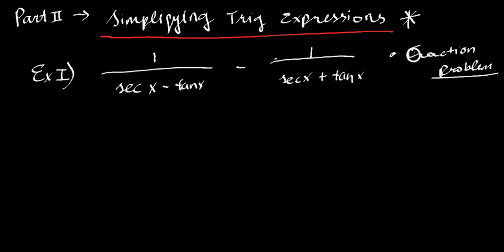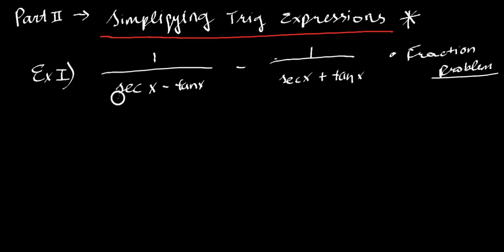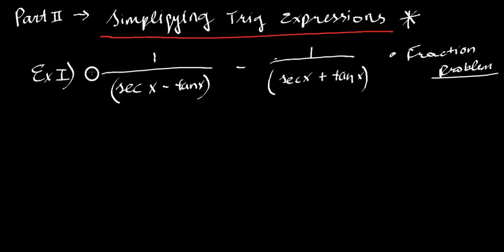I'm sure you have dealt with fraction problems before. This is nothing more than a subtraction problem. What you have to do is react as you would if you saw something like this. Obviously we need to find the same denominator, and we know our denominator is going to consist of (secant x minus tan x) and (secant x plus tan x).